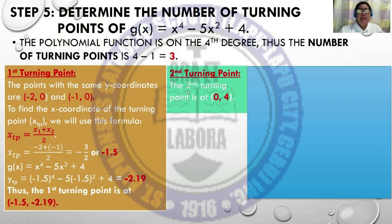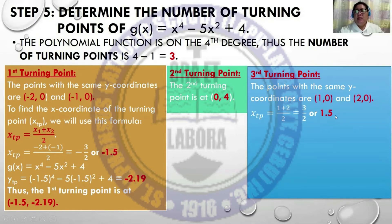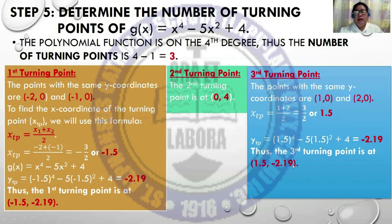The second turning point is at (0, 4). For the third turning point, the points with the same y-coordinates are (1, 0) and (2, 0). Applying the midpoint formula gives x = 1.5, and substituting into the function gives a y-value of -2.19. Thus the third turning point is at (1.5, -2.19).